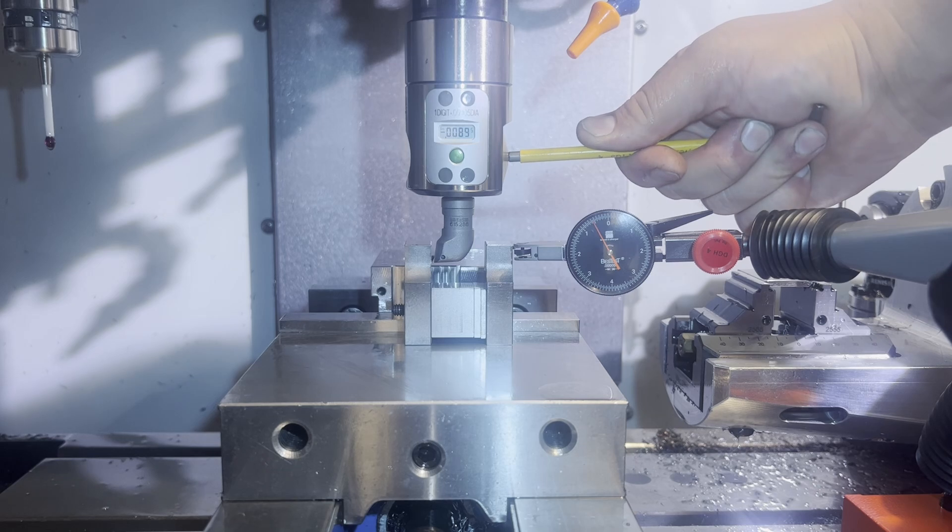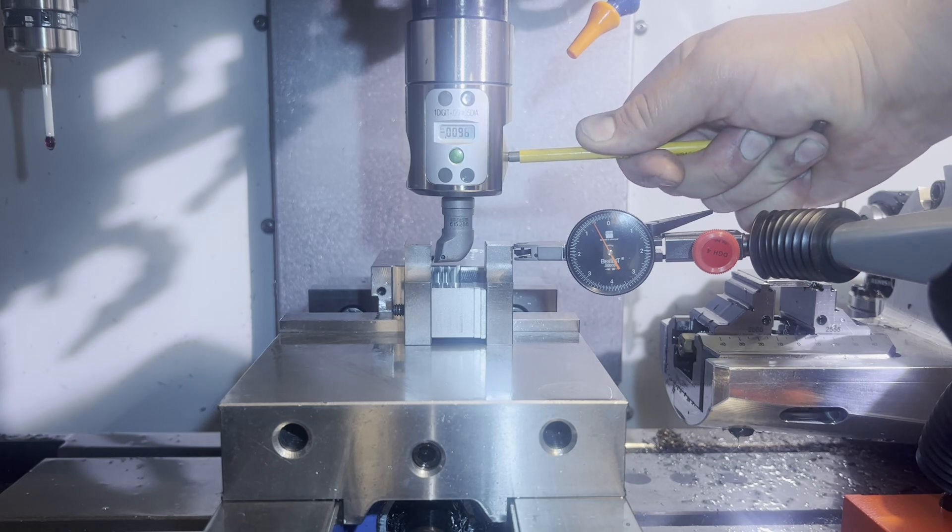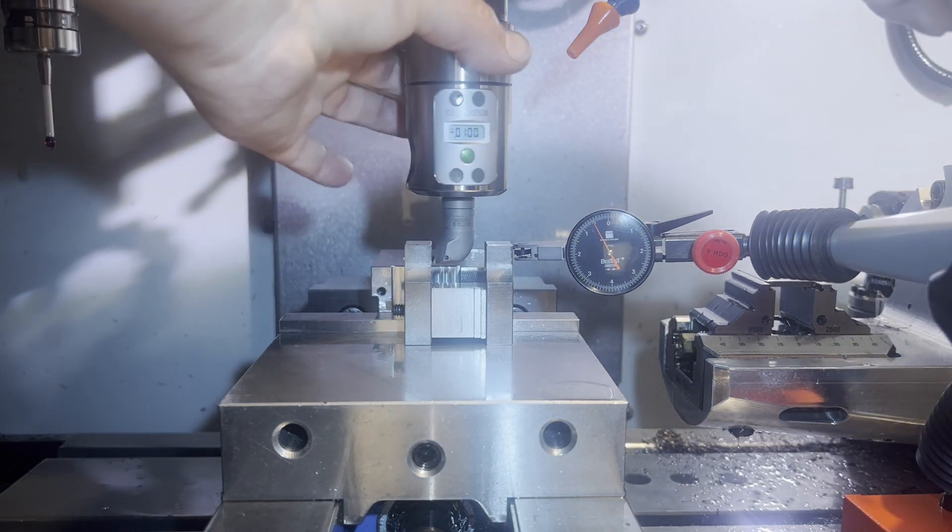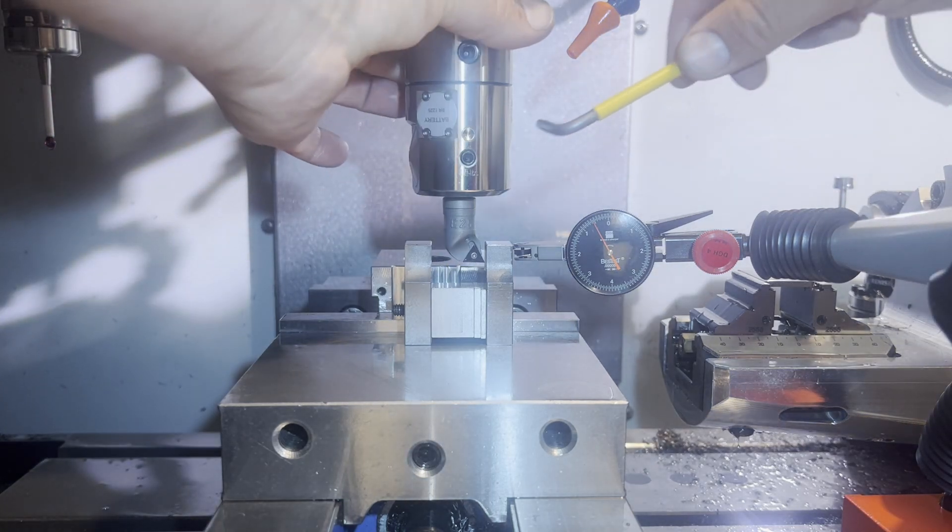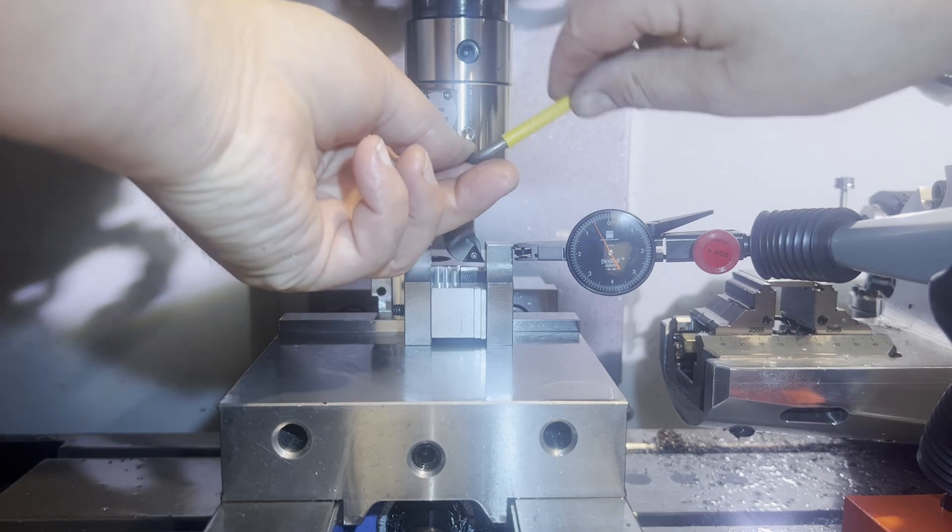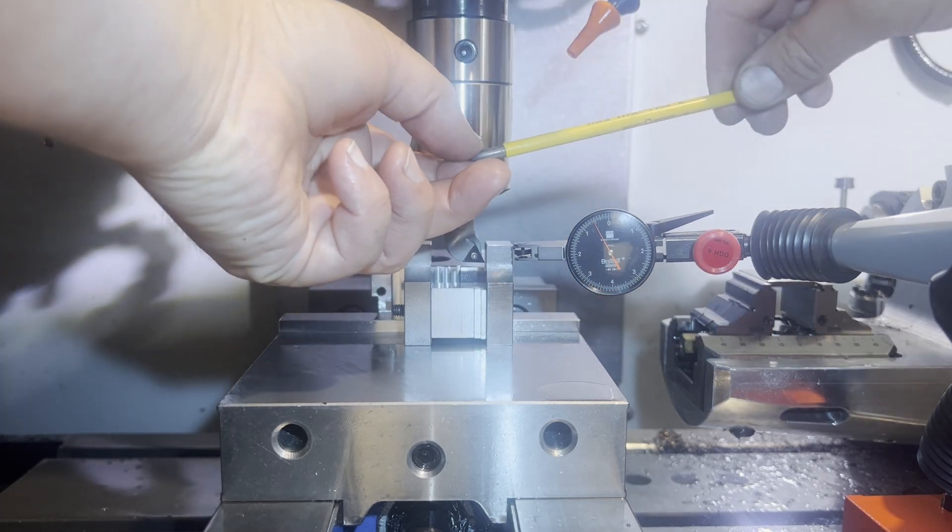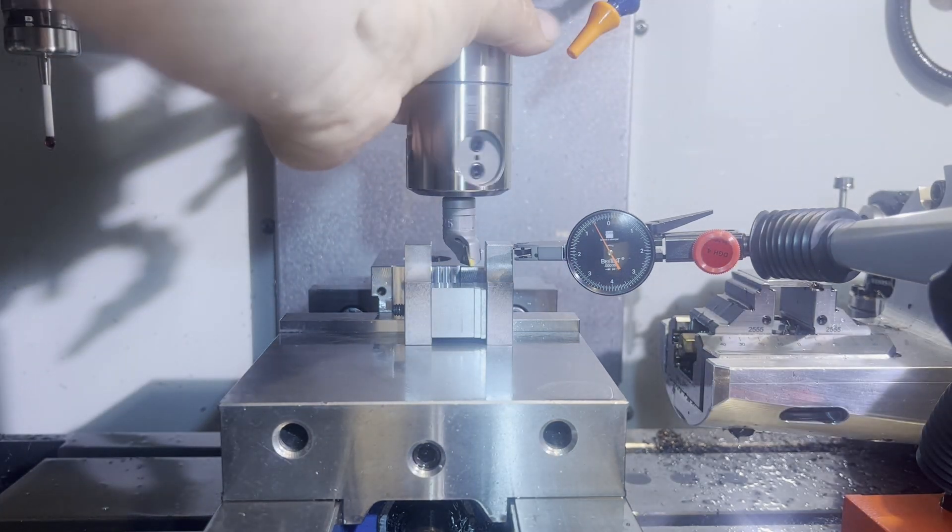Something like a Deckel or an old Bridgeport, it might be two or three tenths. Something like a true jig bore, it'd probably be under a micron. It really just depends on how stiff the machine doing the cutting is.